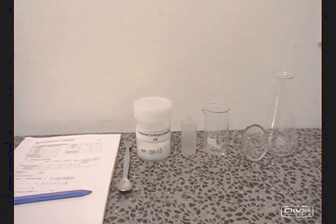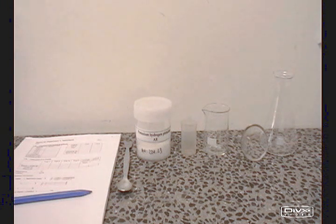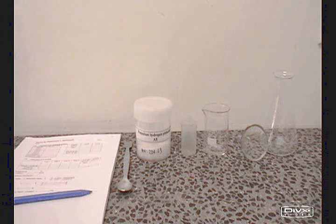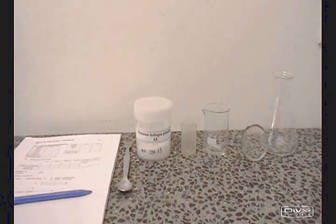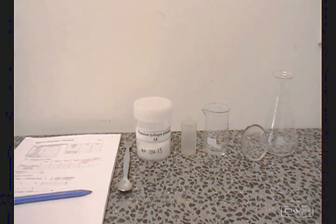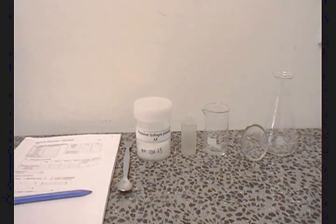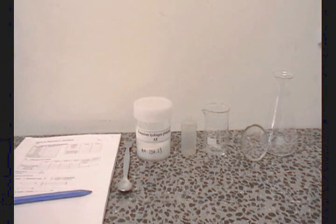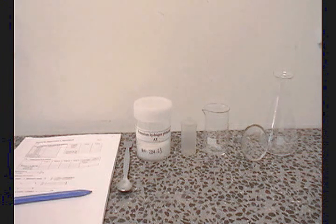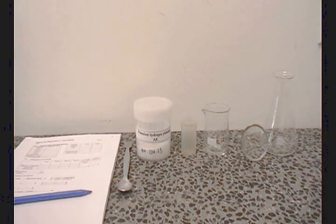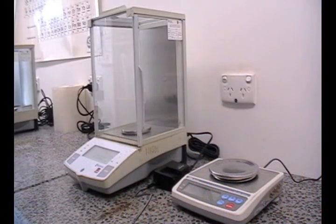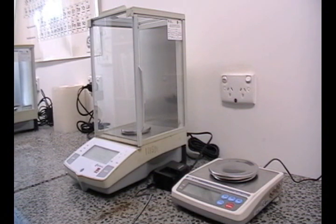The equipment that you'll be needing today, starting from left to right, is a lab diary, a pen, a spatula, the substance to be weighed, in this instance potassium hydrogen phthalate, a weigh bottle, a beaker, a funnel, a conical flask, also known as an Erlenmeyer flask, a top pan balance, and an analytical balance.